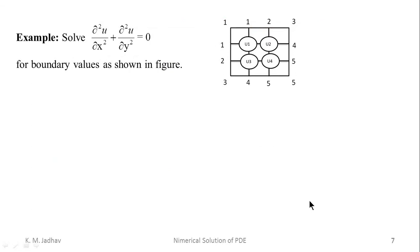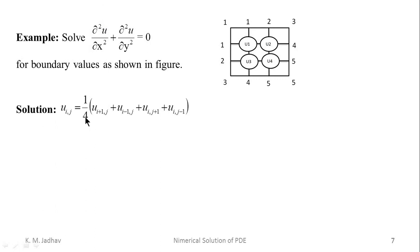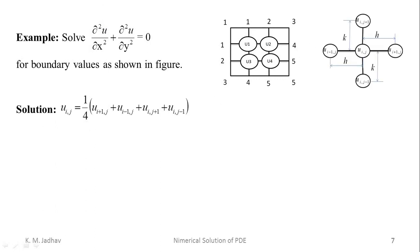Let us solve a problem based on the Laplace equation. The example is: solve ∂²u/∂x² + ∂²u/∂y² = 0 for the boundary values shown in the figure. In the figure, boundary values are given and we have to find the intermediate values u1, u2, u3, and u4. The distribution of u values is governed by this Laplace equation, and the central value equals the average of the four surrounding values.